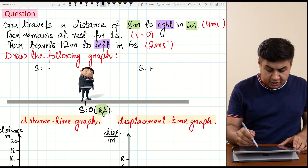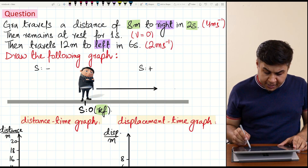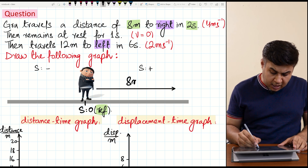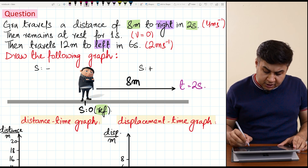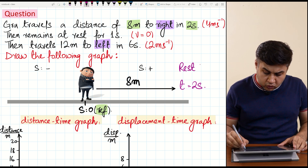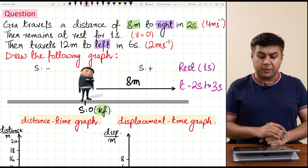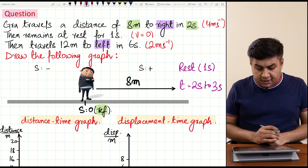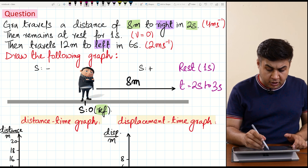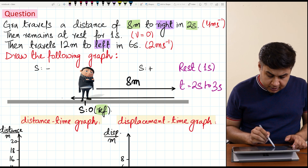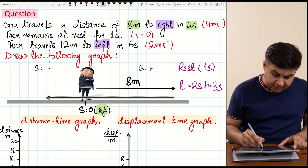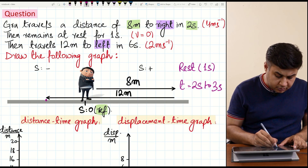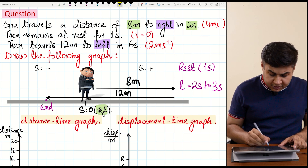Let's depict his journey on the diagram. He is moving a distance of 8 meters towards the right, starting from the starting point. He will reach here at time equal to 2 seconds. Then he is at rest at this point from t equals 2 to t equals 3 seconds, because he has 1 second of rest. Then he travels 12 meters towards left in 6 seconds. This is the distance to the left side of his starting point, and this is his ending point.